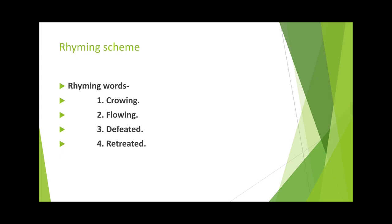Again, the third and fourth words — defeated and retreated — also sound similar. So it means I have mentioned two pairs of words: in the first pair, growing and flowing; in the second pair, defeated and retreated. Both pairs have words that sound similar, and these are our rhyming words — meaning words that sound similar.